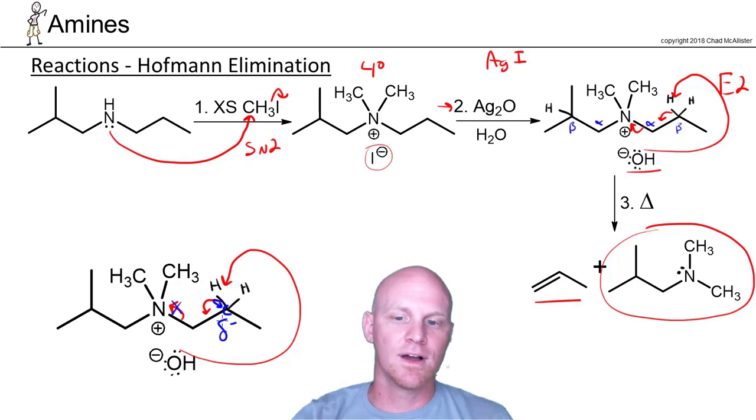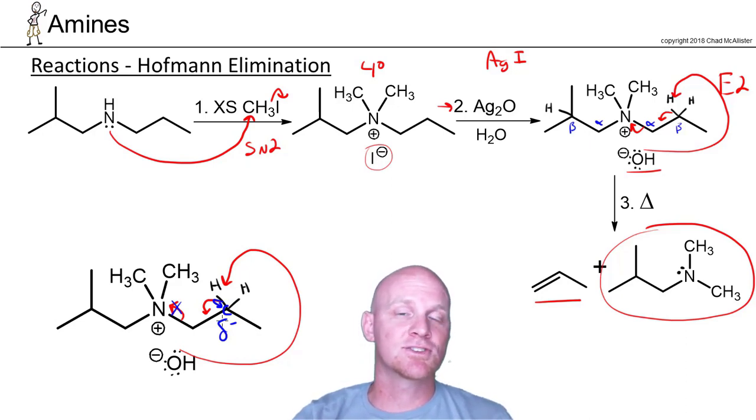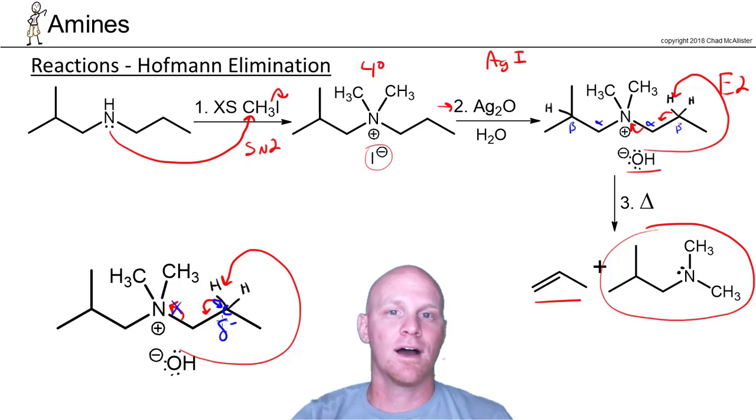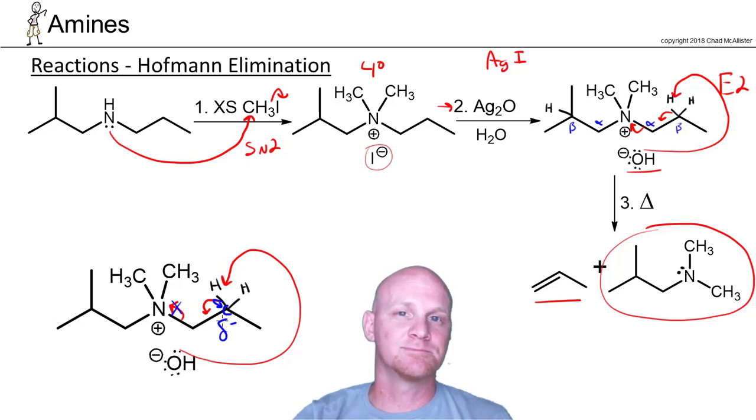So that's why this goes Hoffman — that's the big deal. The big thing you need to remember is that the transition state is carbanion-like, hence we're forming the least-substituted alkene.